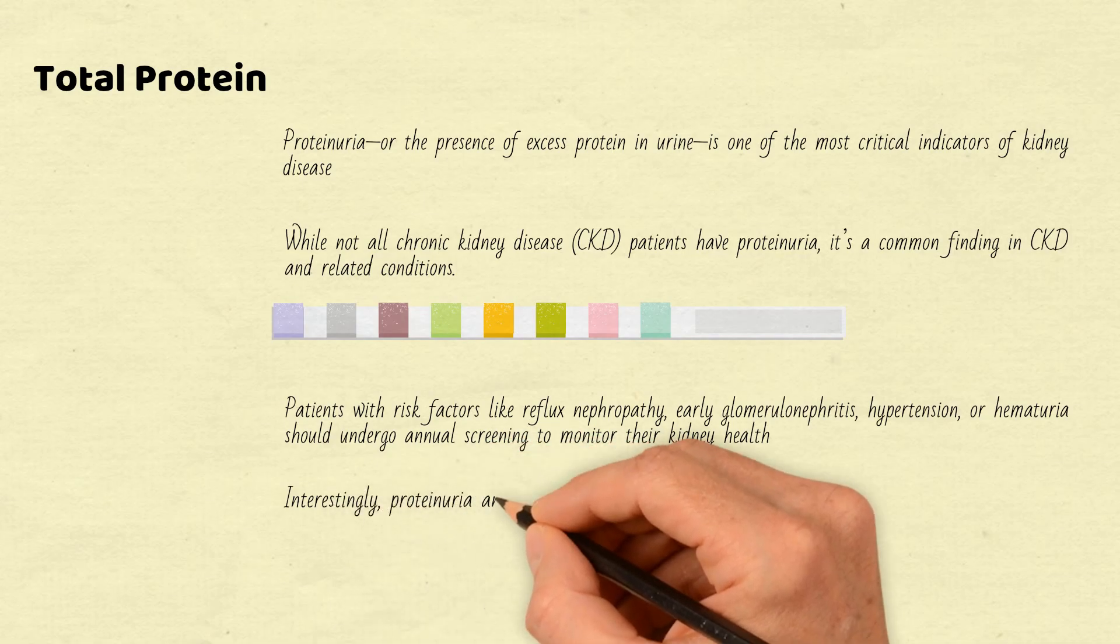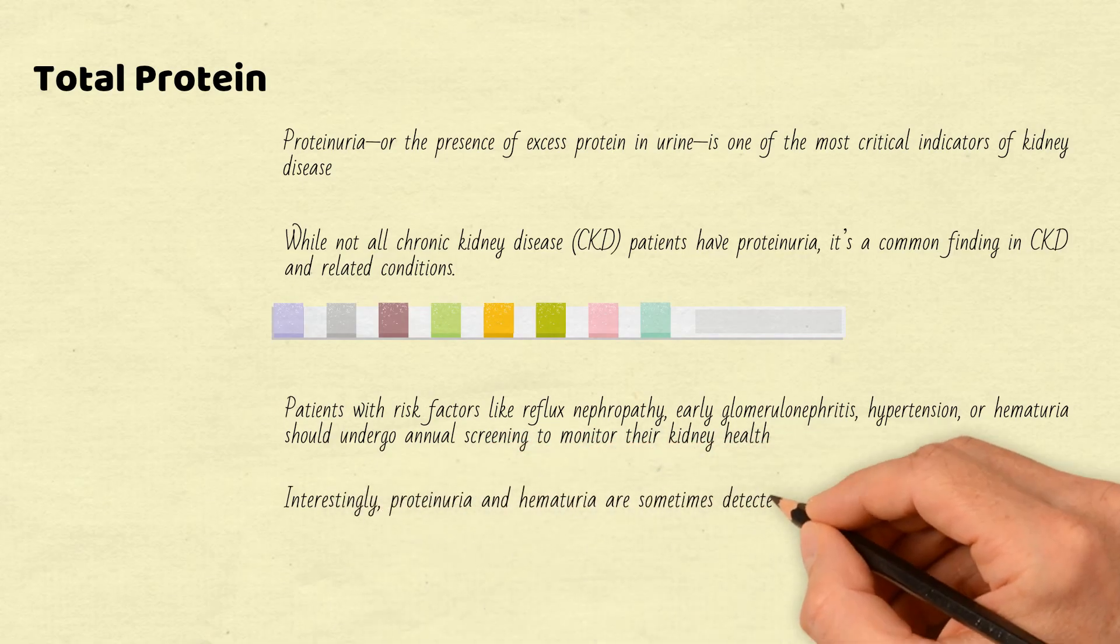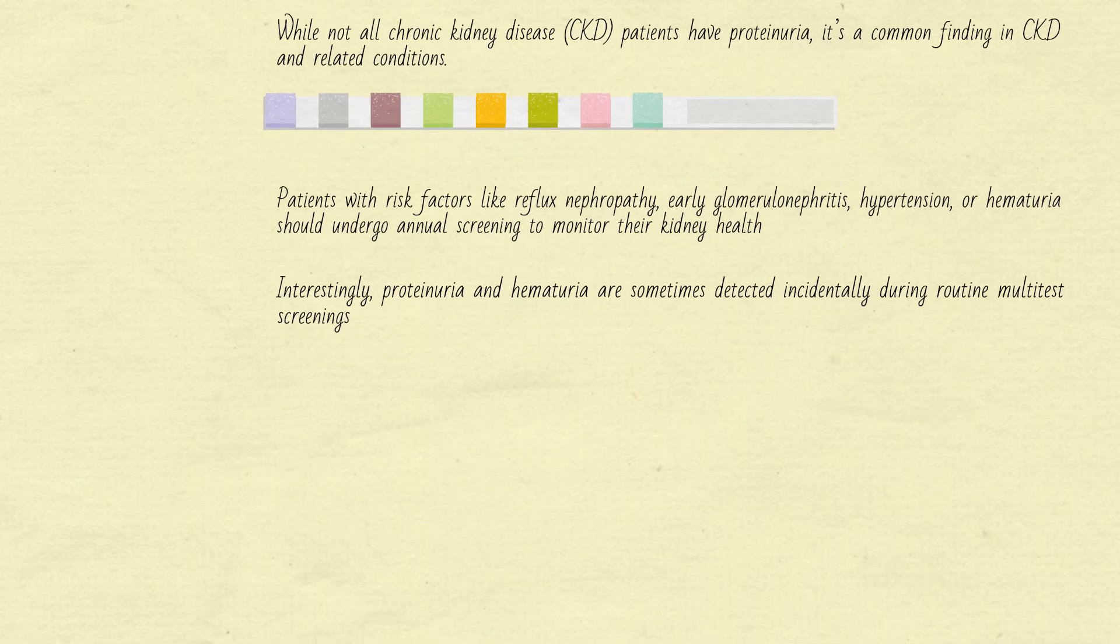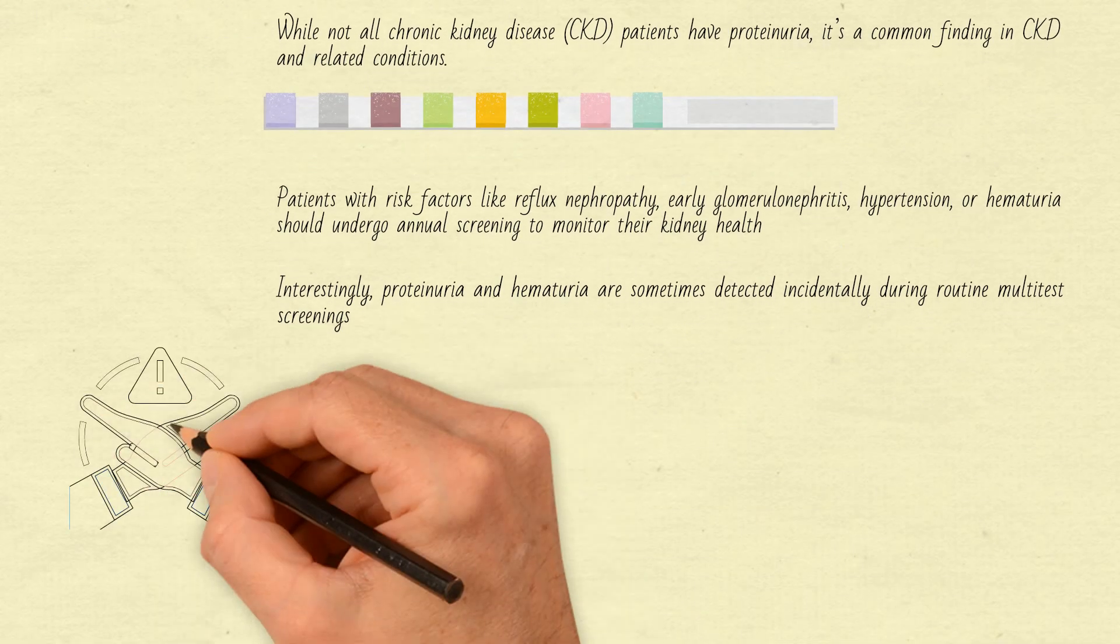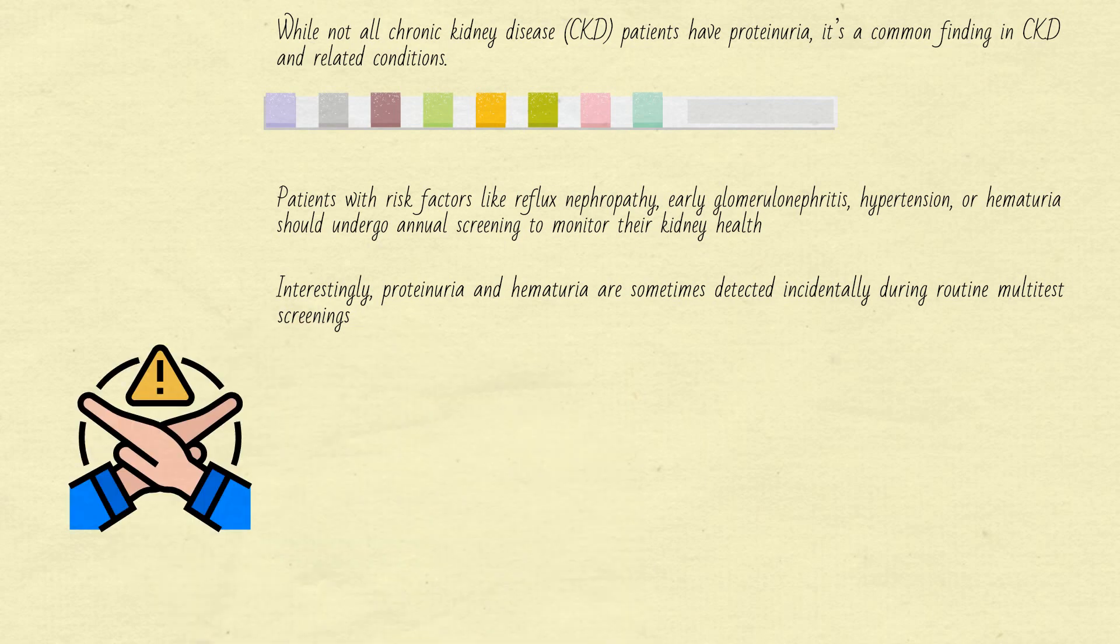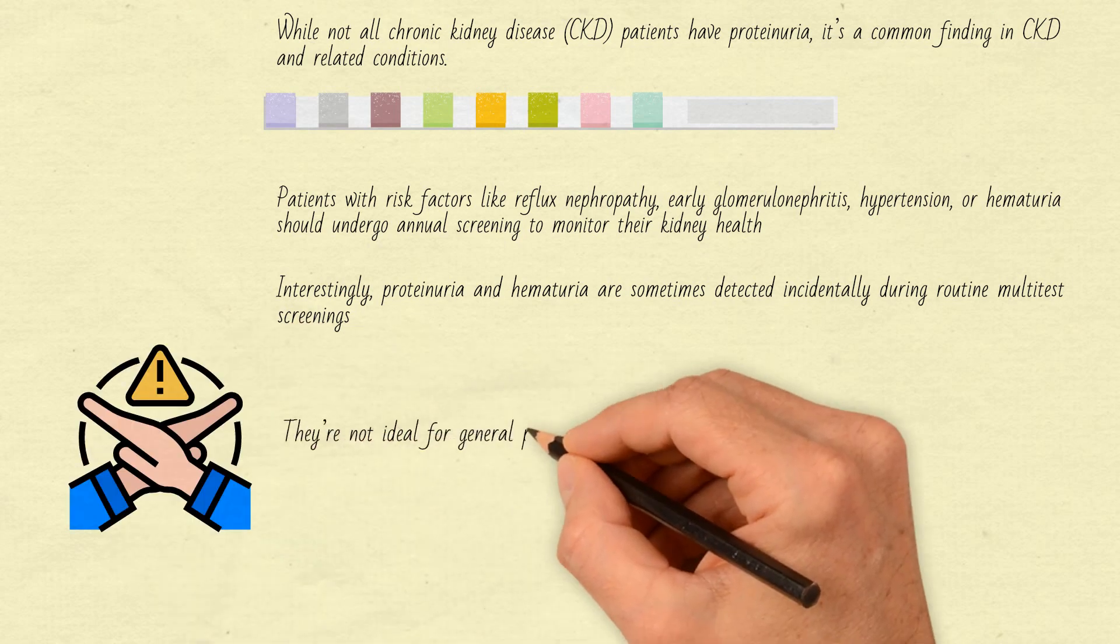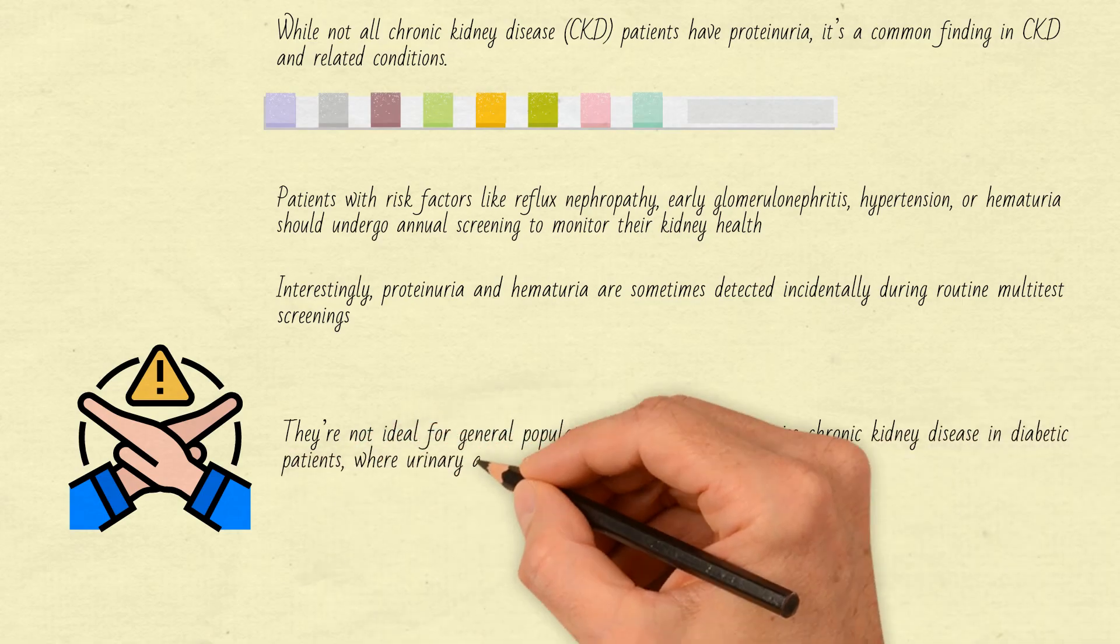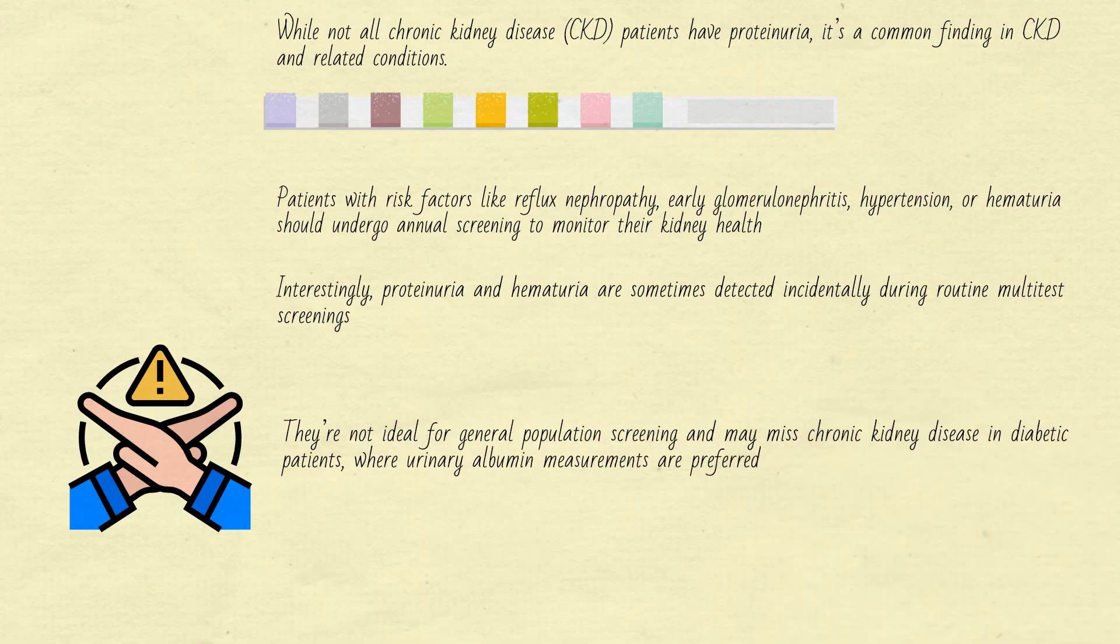Interestingly, proteinuria and hematuria are sometimes detected incidentally during routine multi-test screenings. But like any test, reagent strips have their limitations. They're not ideal for general population screening and may miss chronic kidney disease in diabetic patients, where urinary albumin measurements are preferred. In fact, there's growing consensus that reagent strip tests may not be reliable in certain clinical contexts.